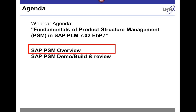Today we're going to do a little overview of that, and then I'm going to go into the system and show you a live example of building out a product variant, adding some variant items to the overall bill, and then how to simulate a configuration for that.